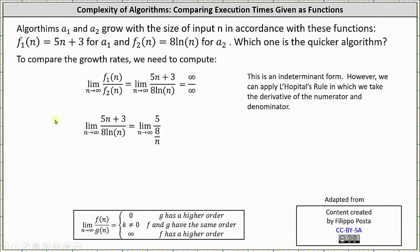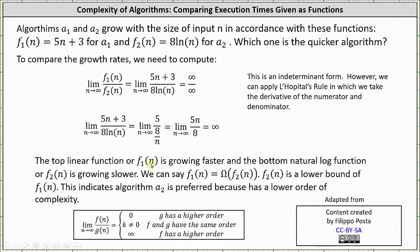The derivative of 5n plus 3 is 5, and the derivative of 8 natural log n is 8 divided by n. So 5 divided by 8 over n is equivalent to 5 times n over 8, giving us the limit as n approaches infinity of 5n divided by 8. In this form the denominator is constant while the numerator grows without bound, so the limit approaches infinity. This indicates the function in the numerator has a higher order. The linear function f sub one of n is growing faster, while the natural log function f sub two of n is growing slower. We can state that f sub one of n is Big Omega of f sub two of n, indicating f sub two of n is a lower bound of f sub one of n.